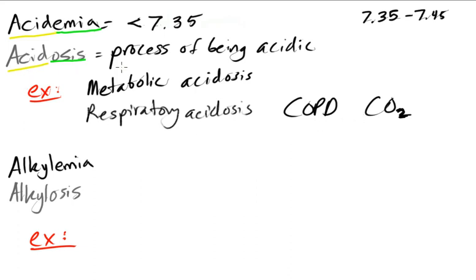So acidosis is a process of being acidic. In this case, it would be a metabolic process that is causing the acidic state. The patient would have an acidemia if they had a pH of 7.10, but the process that's causing it would be the metabolic acidosis or respiratory acidosis.